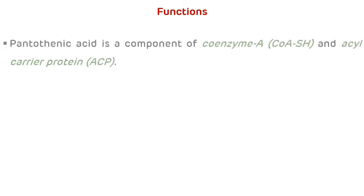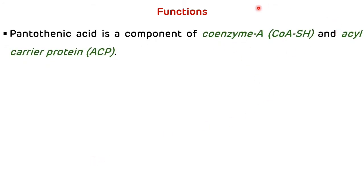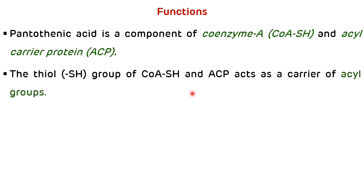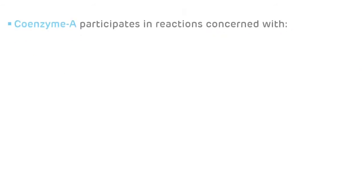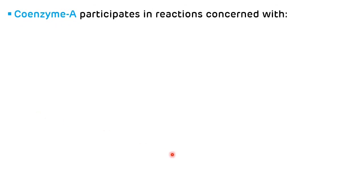Now biochemical functions of pantothenic acid. Pantothenic acid is a component of coenzyme A and acyl carrier protein, and we have already seen these are the two active forms of pantothenic acid. The thiol group of coenzyme A and acyl carrier protein acts as a carrier of acyl groups.